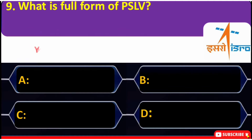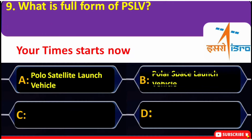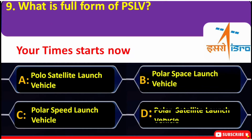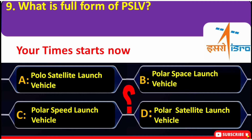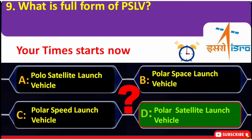What is the full form of PSLV? A. Augmented Launch Vehicle, B. Polar Space Launch Vehicle, C. Polar Speed Launch Vehicle, D. Polar Satellite Launch Vehicle. The correct answer is D — Polar Satellite Launch Vehicle.